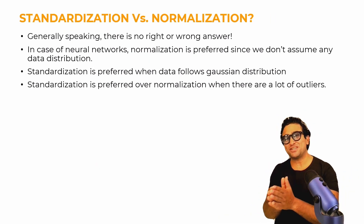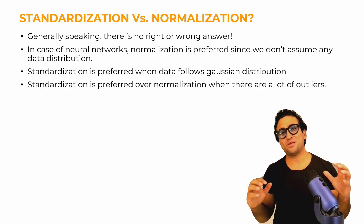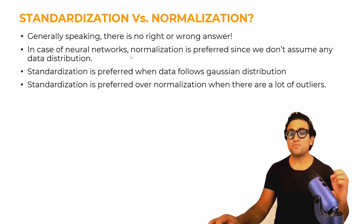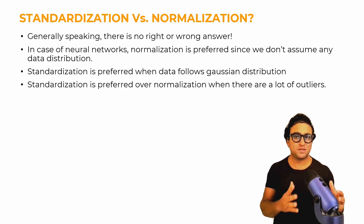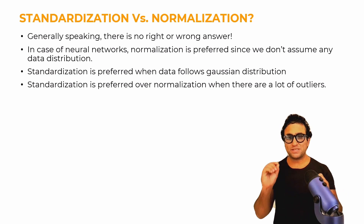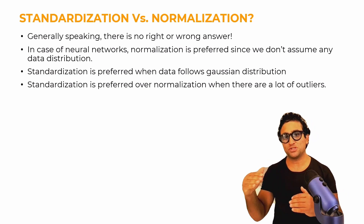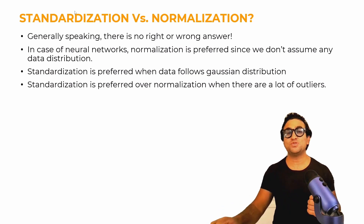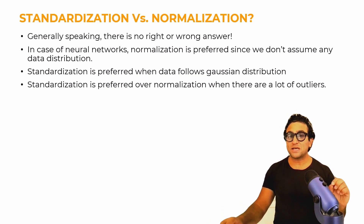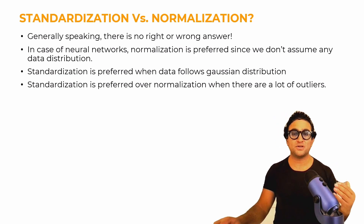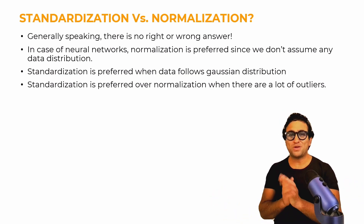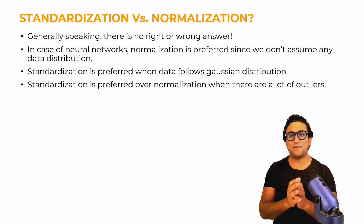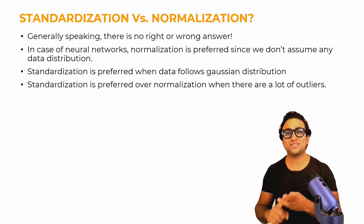When to use standardization versus normalization — generally speaking, there is no right or wrong answer. For artificial neural networks, normalization is preferred since we don't assume any data distribution beforehand. Standardization is preferred when data follows a Gaussian distribution. Standardization is also preferred over normalization when there are a lot of outliers in the data. I'm now going to shift to the Jupyter notebook and show a detailed code walkthrough performing both standardization and normalization from scratch.